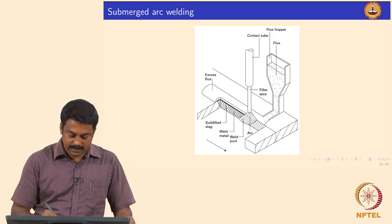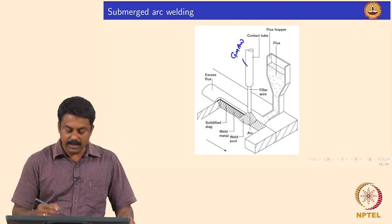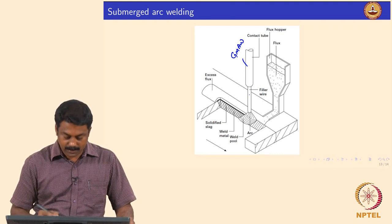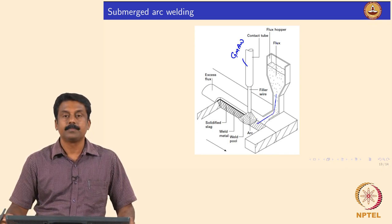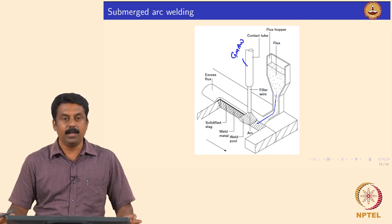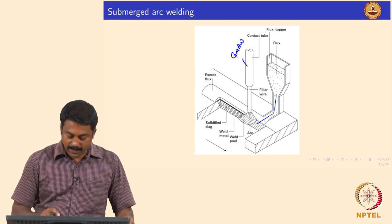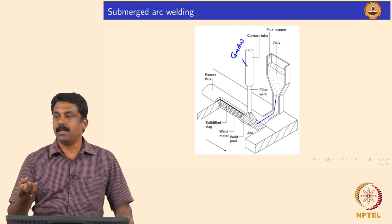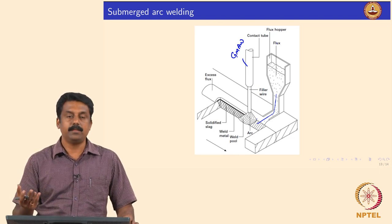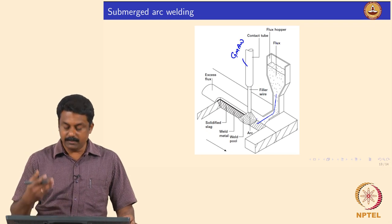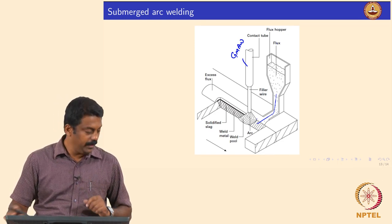The SAW setup is similar to GMAW — we have a contact tip and an electrode. In submerged arc welding the diameter is much larger than conventional electrodes, we form an arc, and during the process we also send flux to submerge the arc. You would not see the arc visible outside. I will show a video so it will be very clear. The flux acts the same way as in MMAW or flux-cored arc welding — it can affect metal transfer, generate shielding gas if necessary, and provide complete protection.